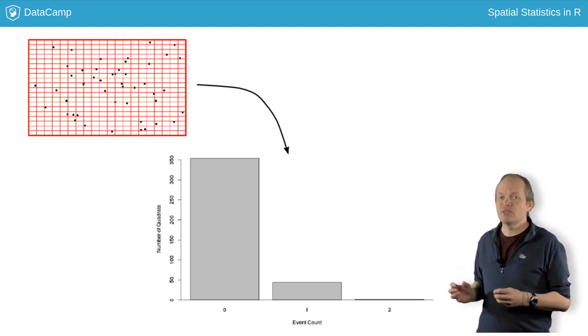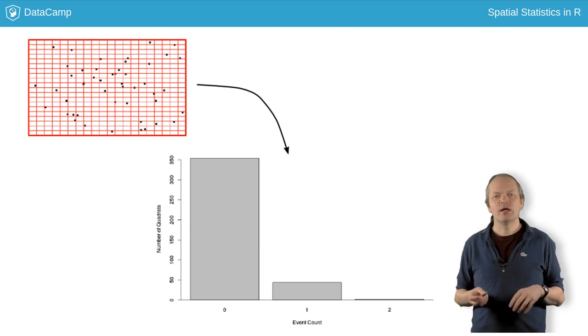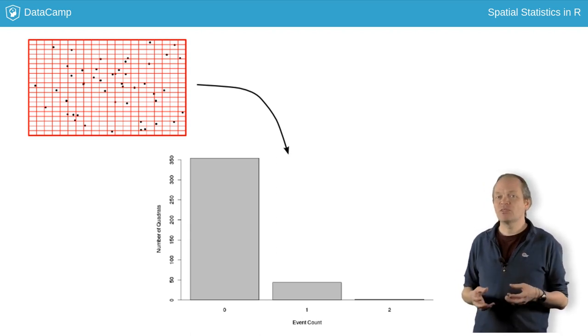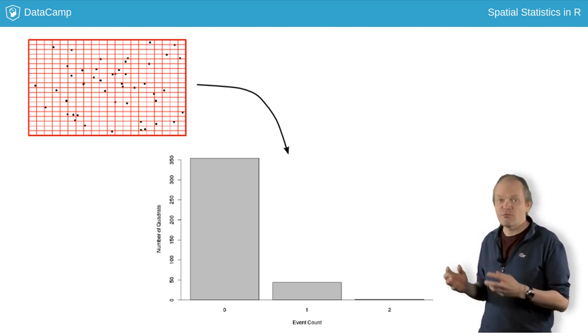There are alternative tests that don't depend on arbitrary subdivisions, instead relying on estimating properties of the spatial point process from the events.